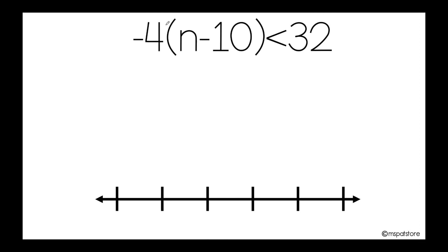So let's see: negative 4 times positive n is negative 4n. Negative 4 times negative 10 — remember, when you're multiplying and they have the same sign, your answer is positive — so it will be positive 40. I'm going to bring down my symbol, which is less than, and bring down the 32.